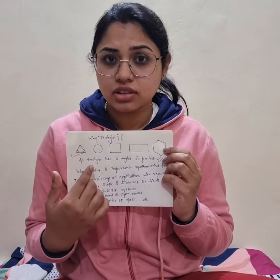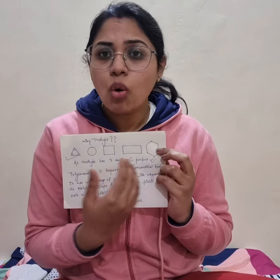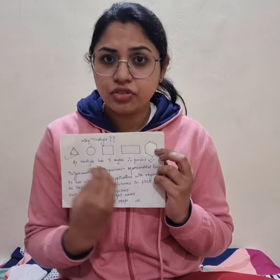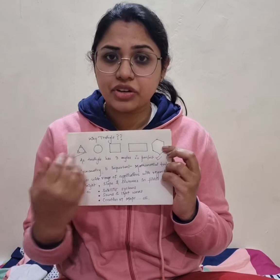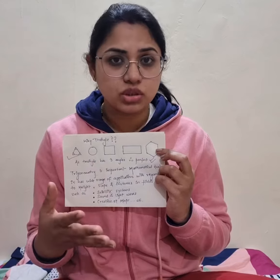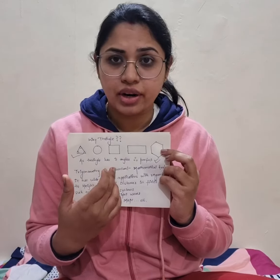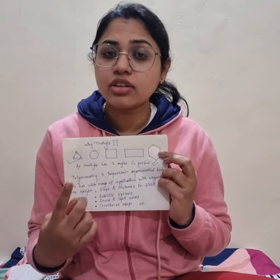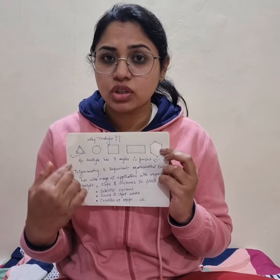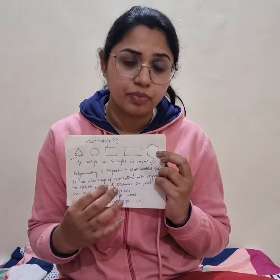First is a triangle, then a circle, then a square, rectangle, and then a hexagon. All these geometrical shapes have different varieties of sides and angles. In a triangle, we have three sides and three angles. In a circle, there are no sides, just circumference. In a square, we have four sides and four angles. There is only one geometrical figure having three sides and three angles, which is the triangle. So a triangle is a perfect shape for studying trigonometry.